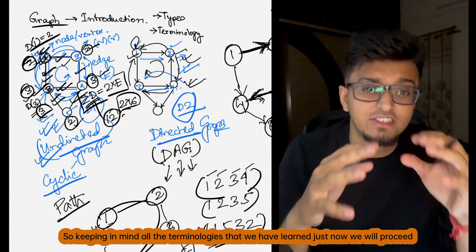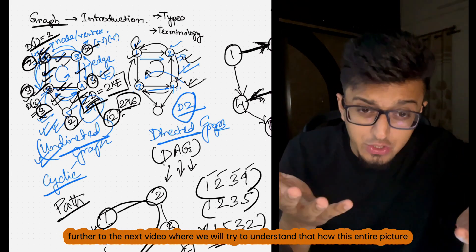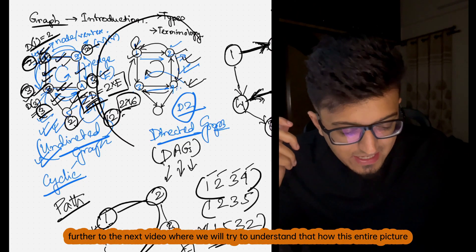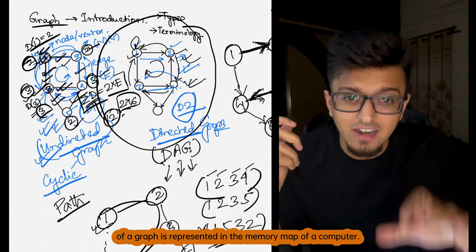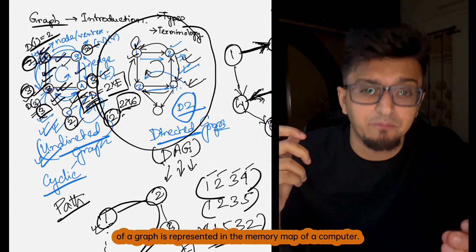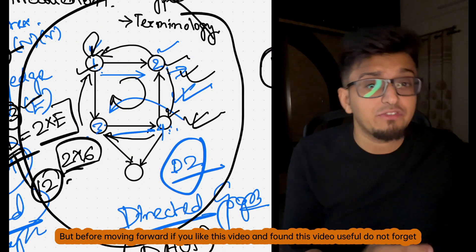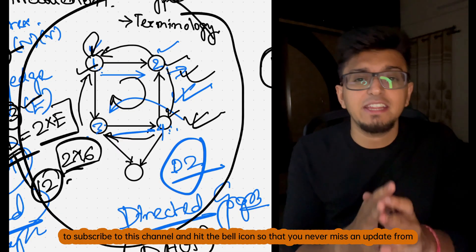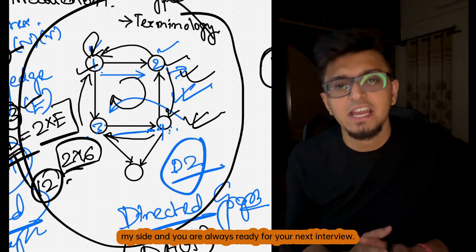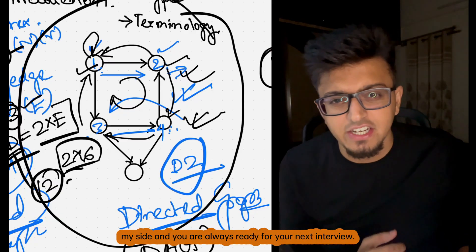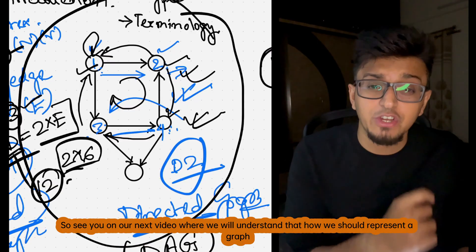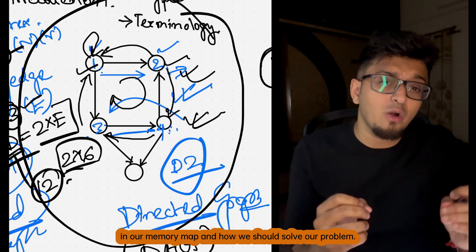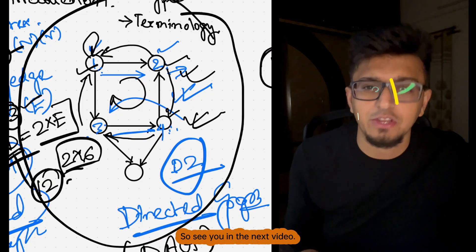I have covered more or less all the concepts and terminologies you need to know before trying to solve any graph problem. In the next video we will understand how this entire picture of a graph is represented in the memory map of a computer. If you liked this video, do not forget to subscribe to this channel and hit the bell icon so you never miss an update. See you in the next video — thank you!